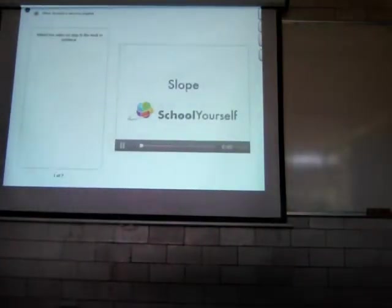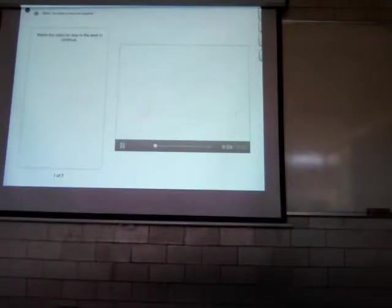Let's talk about slope. The slope of a line measures how steep the line is. Think of the line as the slope of a hill. This slope is pretty shallow, whereas this slope is pretty steep.